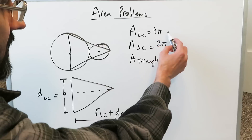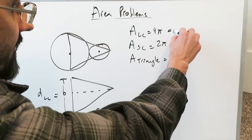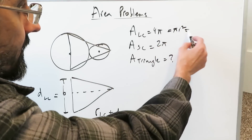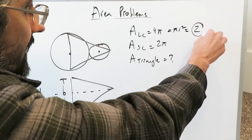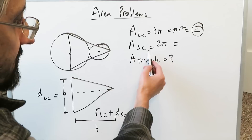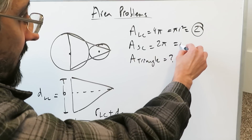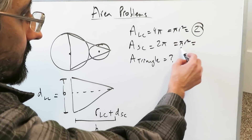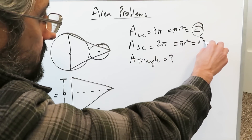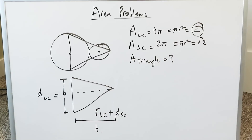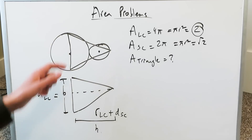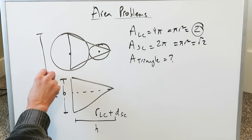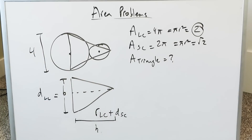Let's look at the large circle: 4π is equal to πr², so the radius is equal to 2. The diameter must be twice that, which is 4.